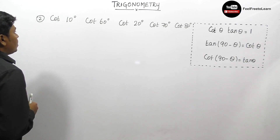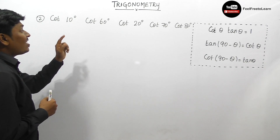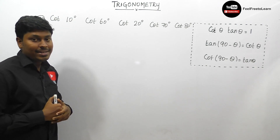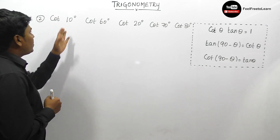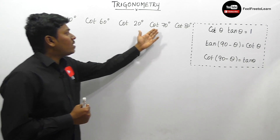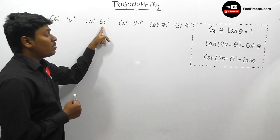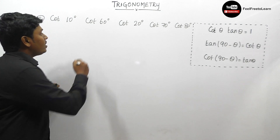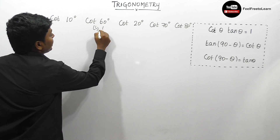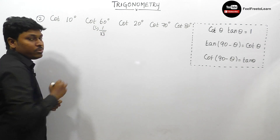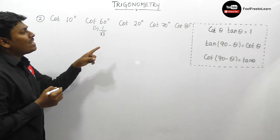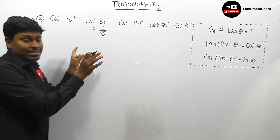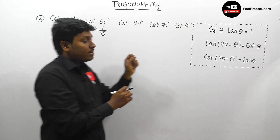Question number 2: cot 10° · cot 60° · cot 20° · cot 70° · cot 80°. We don't know cot 10°, cot 20°, cot 70°, or cot 80°, but cot 60° = 1/√3. Our target is to convert the expression in terms of cot θ · tan θ pairs. cot 80° can be written as cot(90° − 10°) = tan 10°. So cot 10° · tan 10° = 1.